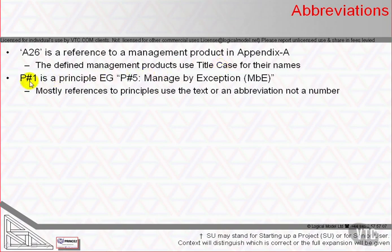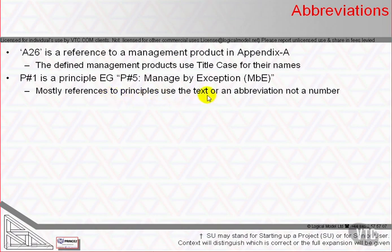There are the 7 principles, which may be referred to by number — 1, 2, 3, 4 — or by their name, such as Management by Exception, or occasionally by their syllabus reference if they have one. Most references to principles use the text, possibly an abbreviation which I'll expand, and rarely a number.